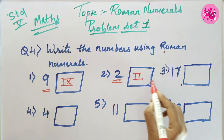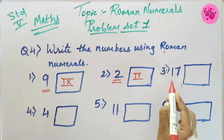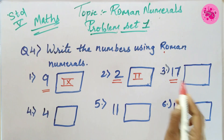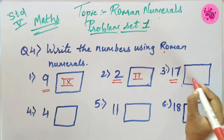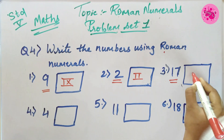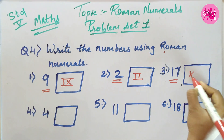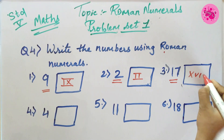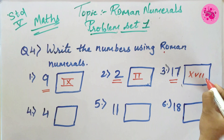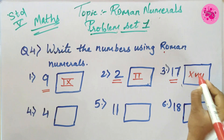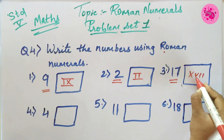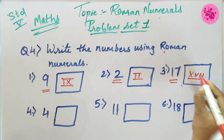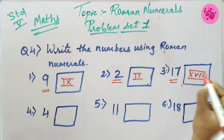Number 3: The number 17 is given. So the answer is X plus V plus I plus I, that is XVII, which equals 17.